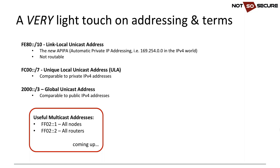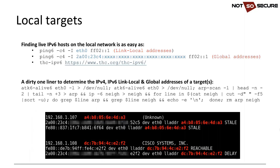We also have multicast addresses: ff02::1 denotes all nodes, and ff02::2 denotes all routers. If anything is addressed to the all-nodes multicast address, it goes to all nodes. We can use ping6 as a rudimentary scan to ping the ff02::1 multicast group — any node on the local network is part of this group and will respond, returning link-local fe80 addresses.